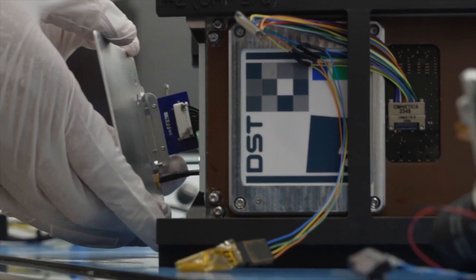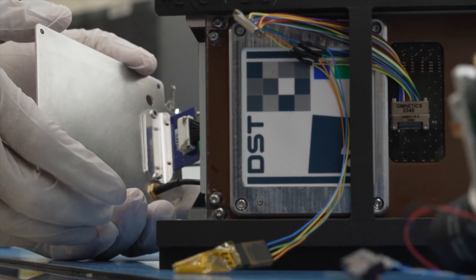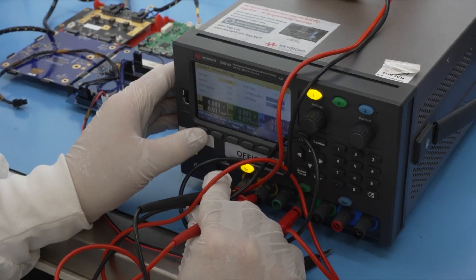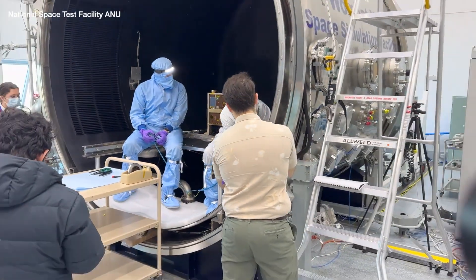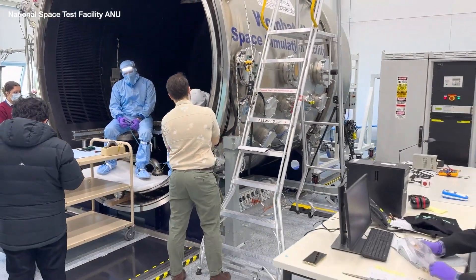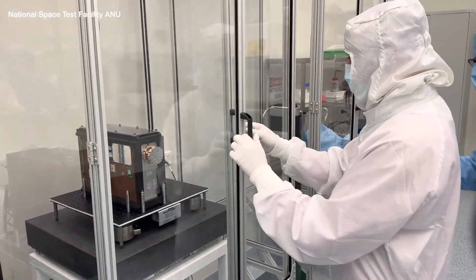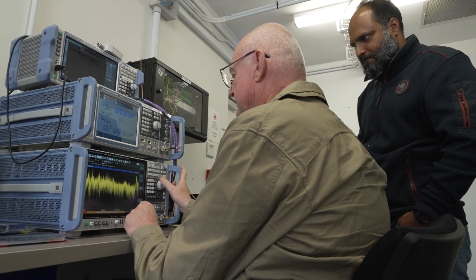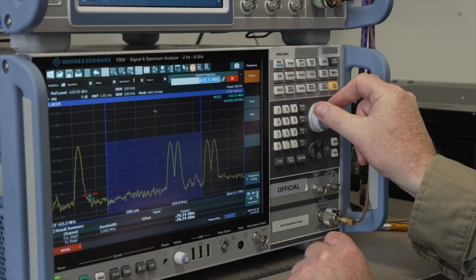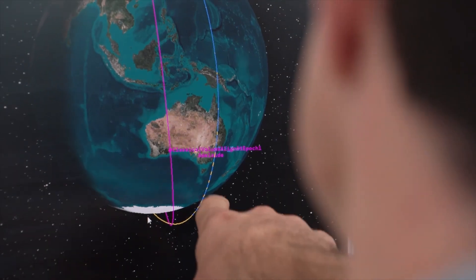And then our team then took that bus, combined it with the payloads, and then ran through the full space qualification tests that are required to get the spacecraft onto orbit, as well as further mission assurance tests to ensure that it's actually going to be reliable and deliver the outcomes we want for defence. Our team here has built up a huge amount of experience across the full life cycle of a space mission.